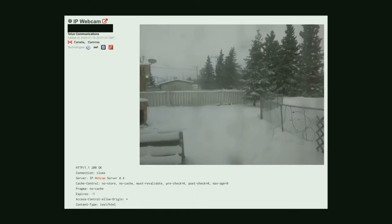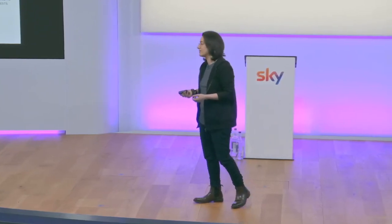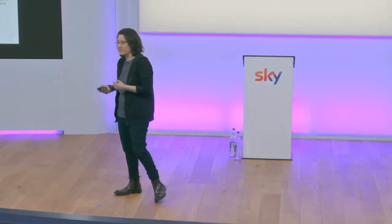I've redacted the IP address, but this is what's happening somewhere in Canada with a webcam. So how does DDoS actually work? The attacker will go through those websites, and because users aren't changing their credentials — they're using default credentials — the attacker will use all those devices, turn them into bots, and then attack the web servers.